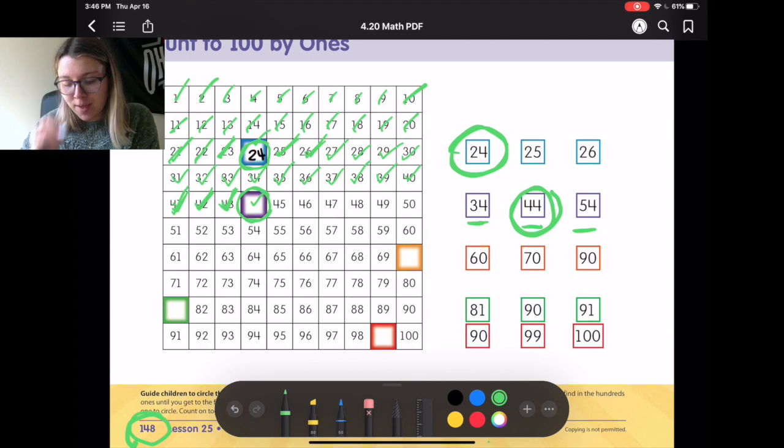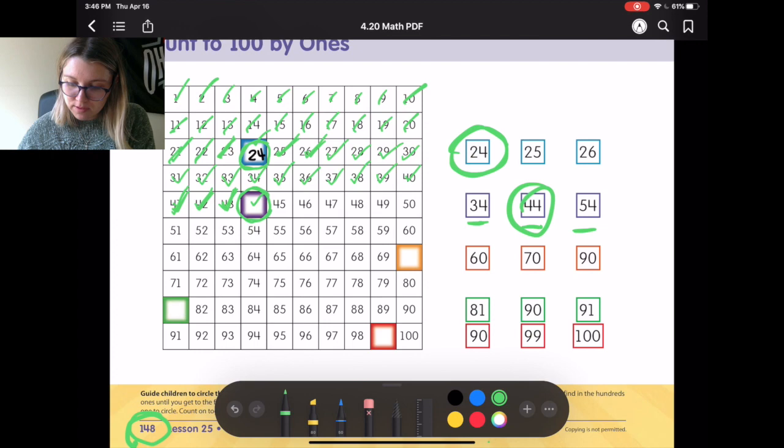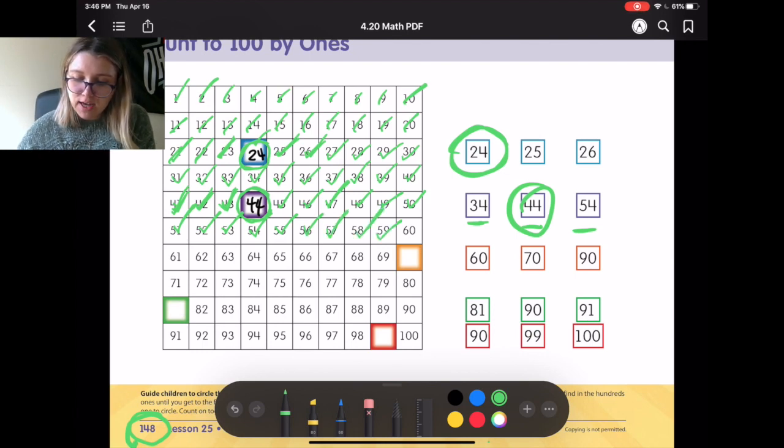Alright, let's keep going. We'll start off at 44. We have 44, then we have 45, 46, 47, 48, 49, 50. 51, 52, 53, 54, 55, 56, 57, 58, 59, 60. 61, 62, 63, 64, 65, 66, 67, 68, 69.